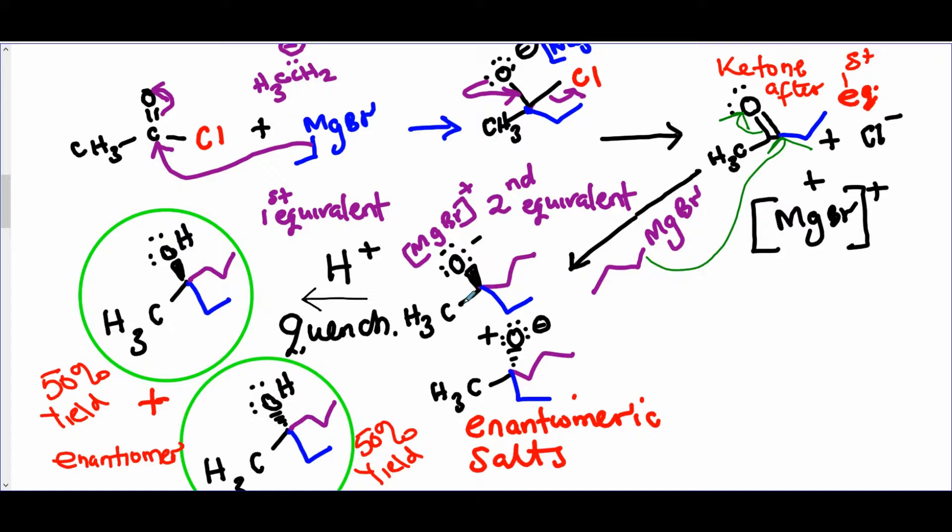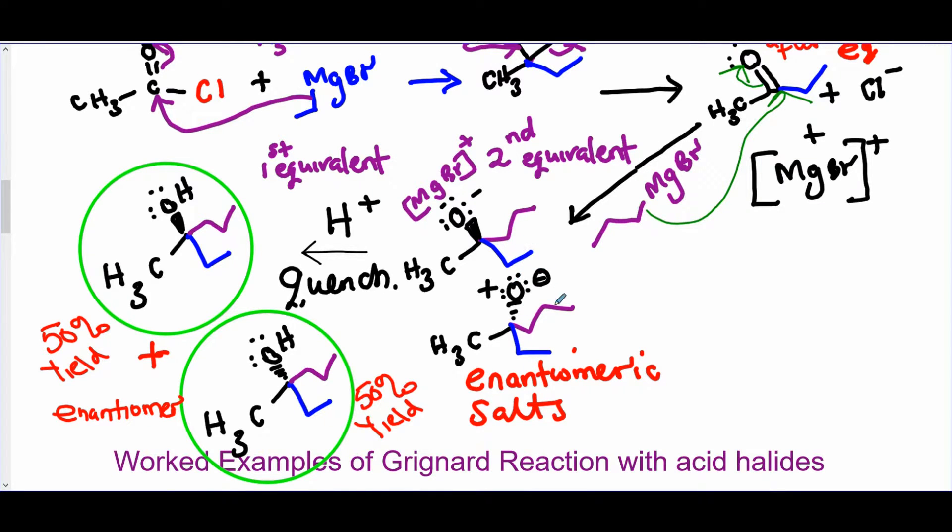because remember, this carbon is sp2 hybridized. The oxygen is sp2 hybridized. This area here is planar, so it's like putting this molecule on top of your desk. You can attack it from the top or from the bottom. So if you attack from the top, you get this. If you attack from the bottom, you get this. In equal amounts, in racemic,